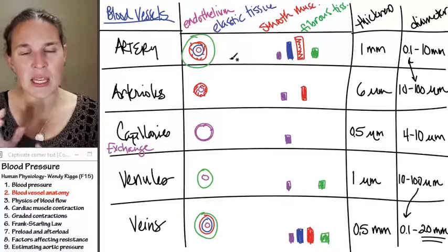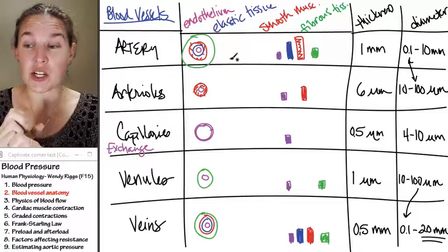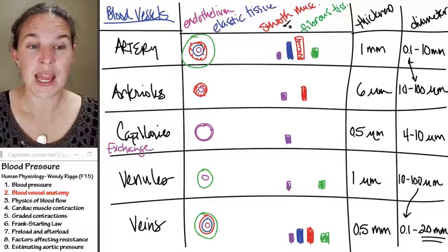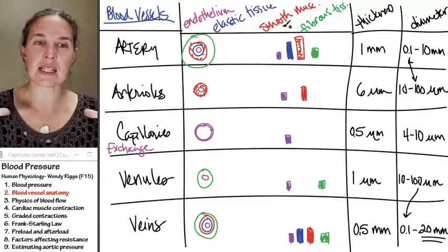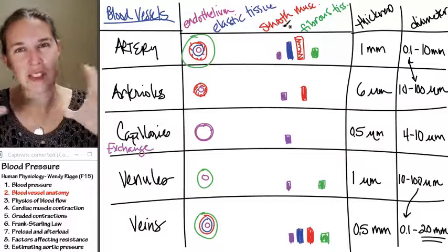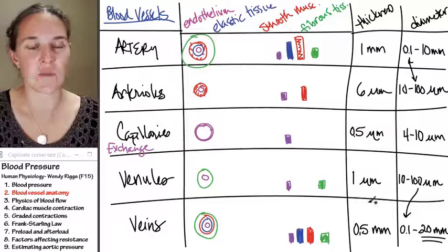It's important because regulating blood pressure is going to happen in vessels that have the smooth muscle. And it's also important because blood pressure is maintained by the blood vessels that have that elastic tissue in them for stretching.